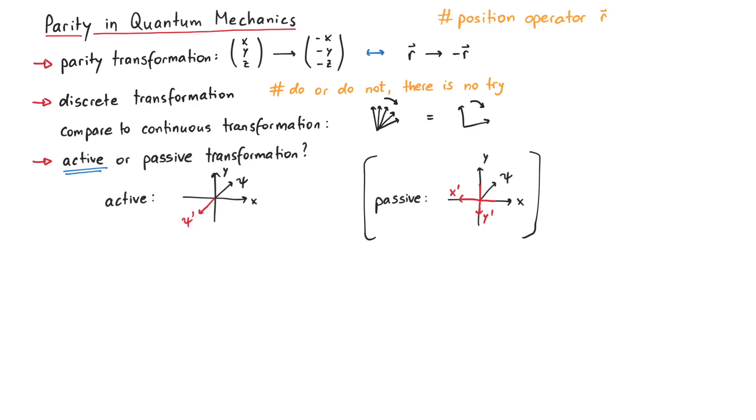Let us now talk about the properties of the parity operator pi. This operator can act on a wavefunction psi and give us psi prime. Our first requirement is that pi is a unitary operator, such that it preserves the norm of a state.